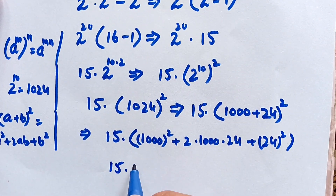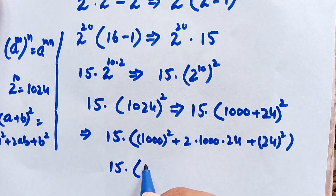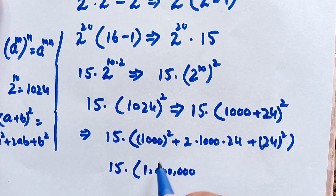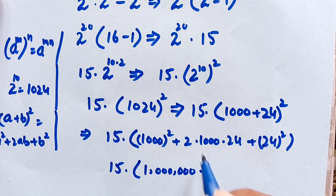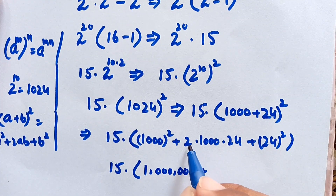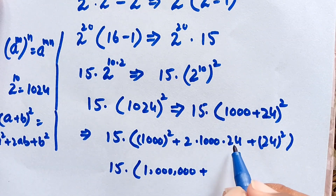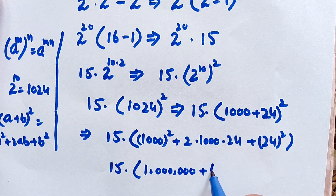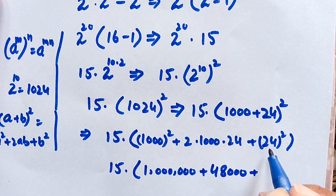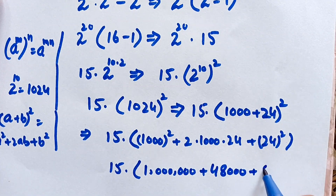Now computing each term: 1000 squared equals 1,000,000. Then 2 times 1000 times 24 equals 48,000. And 24 squared equals 576. So inside the bracket we have 1,000,000 plus 48,000 plus 576.